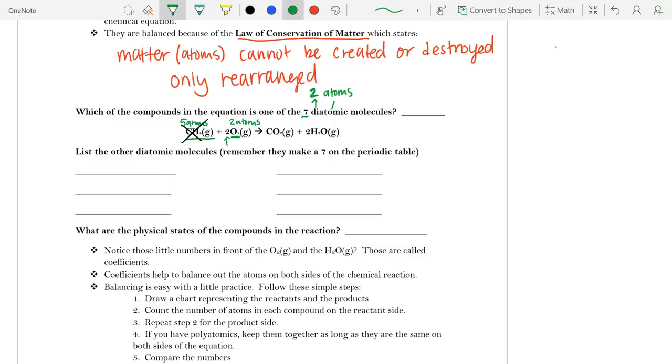We're only looking at our subscripts when we're looking at the number of atoms in a molecule. The number two as our coefficient, that number in front, is actually just referring to how many molecules of it we have. So let's move on and see if we can eliminate all of the other ones as well.